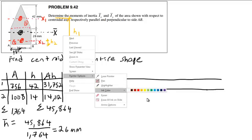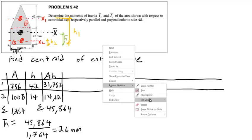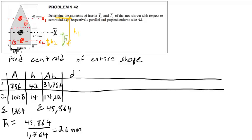So 26 millimeters is the y-bar, or h-bar — the height to the centroid of the entire shape. Using this we can now get the d of each piece, which is the absolute value of the distance between the centroid of that piece and the overall centroid. Since we're looking at the axis through the centroid, d is just the difference in h values. D for piece one is 42 minus 26, which is 16. And d for piece two is 26 minus 14, which is 12.